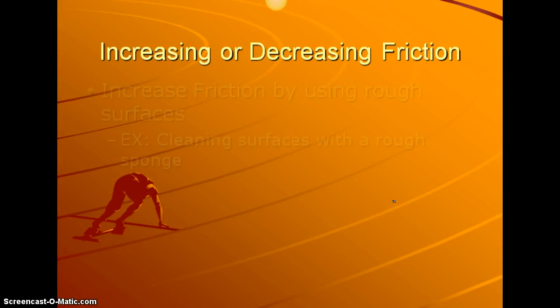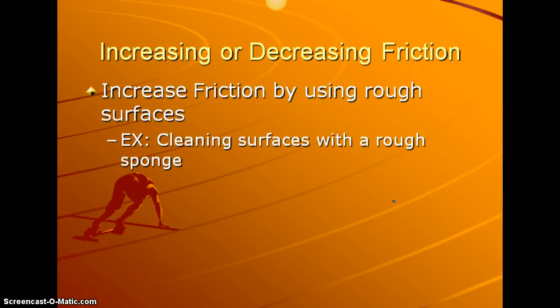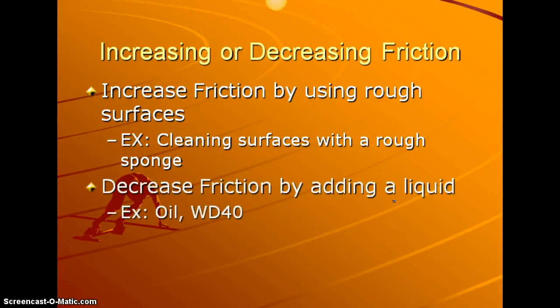So if we want to increase or decrease the friction that is happening, you can use, if you want to increase it, you can use a rough surface. So for example, if you're cleaning something, you can clean something with a sponge that has maybe more rough edges to it to help you clean, increase the friction. And then decreasing friction, you can add a liquid like oil or WD-40.